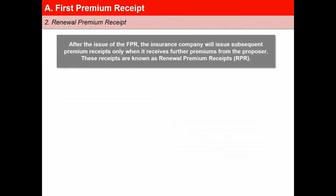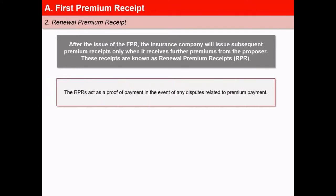After the issue of an FPR, the insurance company will issue subsequent premium receipts only when it receives further premiums from the proposer. These receipts are known as renewal premium receipts, RPR. The RPRs act as a proof of payment in the event of any dispute related to premium payment.